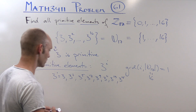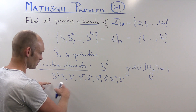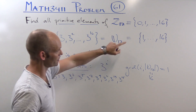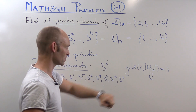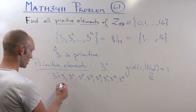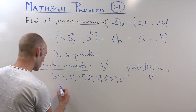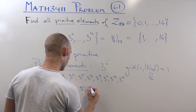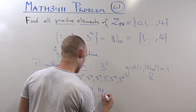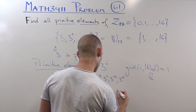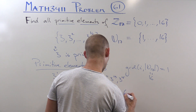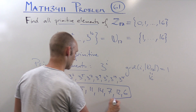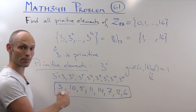That doesn't exactly tell us the specific elements — it's a little bit indirect. So if we work out what we've got: 3 to the 1 is 3, 3 to the 3 is 10, 3 to the 5 is 5, 3 to the 7 is 11, 3 to the 9 is 14, 3 to the 11 is 7, 3 to the 13 is 12, and 3 to the 15 is 6. So these are the primitive elements written up explicitly.